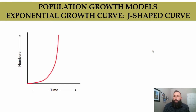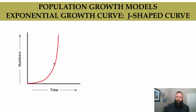Let's talk about population growth models. The first is exponential growth, shown by an exponential growth curve, also called a J-curve. It's called a J-curve because the red line kind of looks like the letter J. Time is on the x-axis and population numbers is on the left.